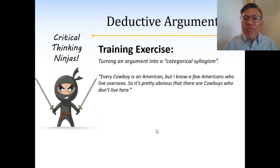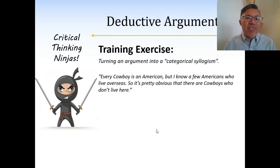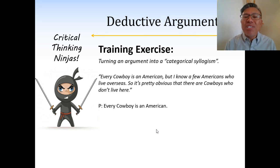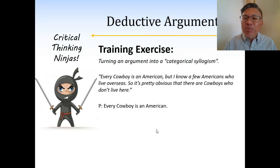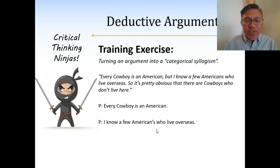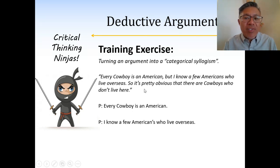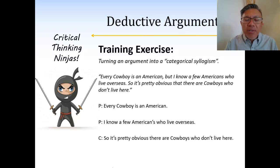In class, we looked at this example: 'Every cowboy is an American, but I know a few Americans who live overseas, so it's pretty obvious that there are cowboys who don't live here.' People can phrase things any way they want, so it's easier to first restate what they're saying into a syllogism. The conclusion the speaker wants us to believe is that there are cowboys who don't live here.